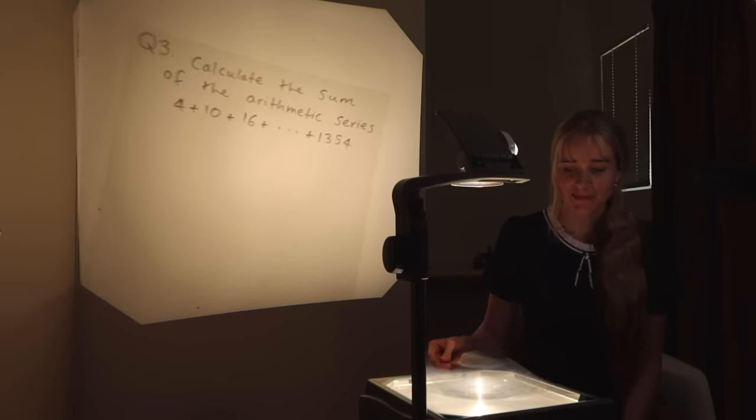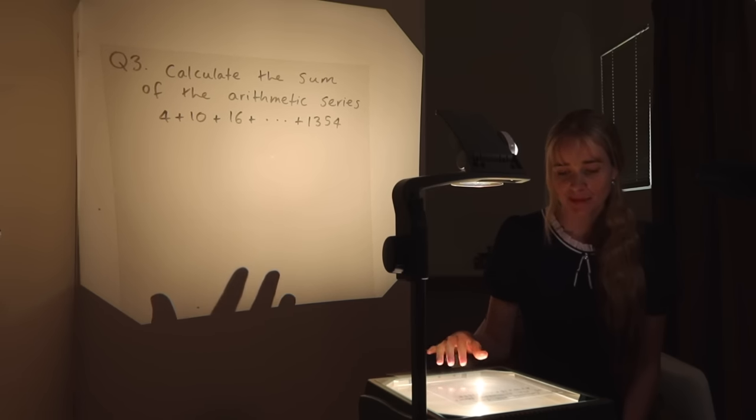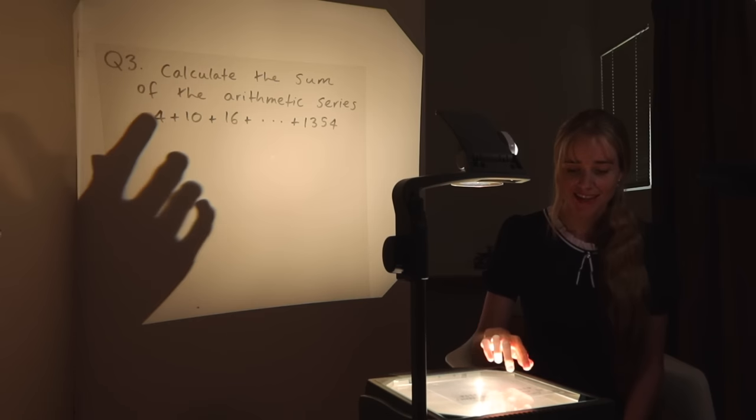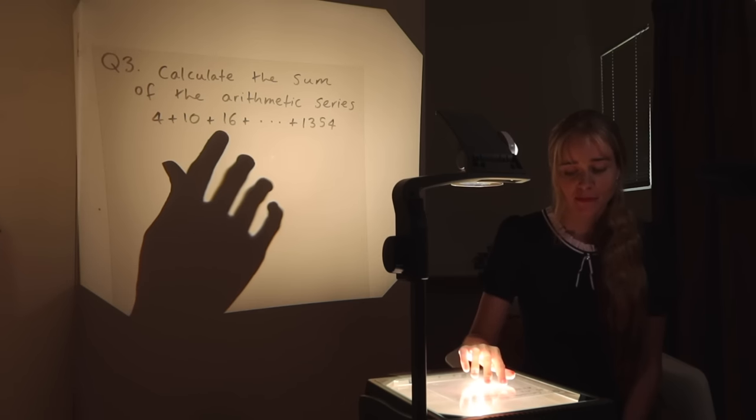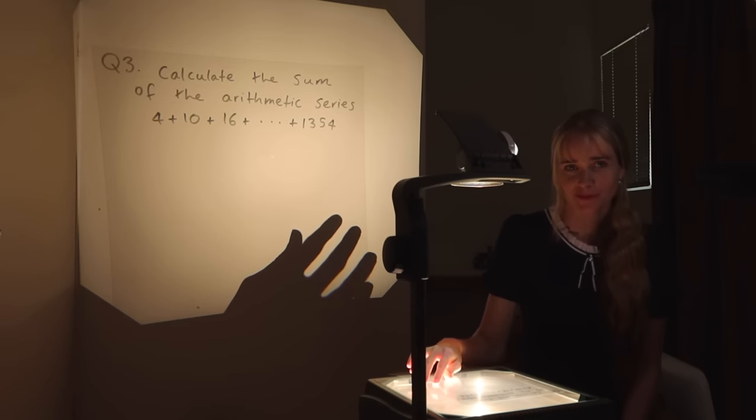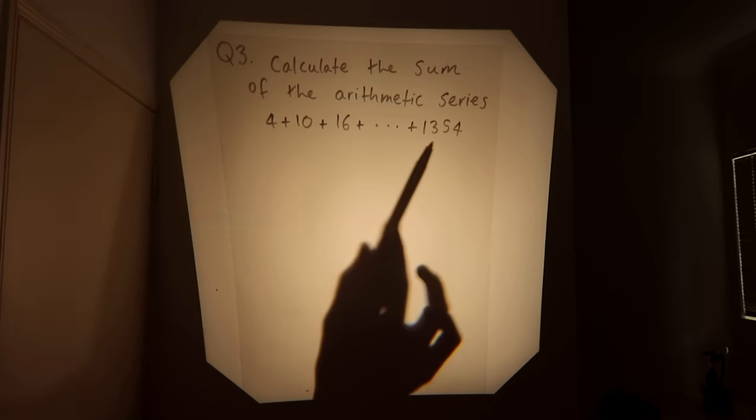Our next stop is Australia. This is an exam question from what is called the HSC advanced paper, and that is something that would be set by high school students in the Australian state of New South Wales. The question says, calculate the sum of the arithmetic series 4 plus 10 plus 16 plus dot dot dot plus 1354. An arithmetic sequence is a sequence of numbers in which there is a constant difference between each term, so you're adding a constant amount every time. An arithmetic series is what it's called when you add all of these terms together.